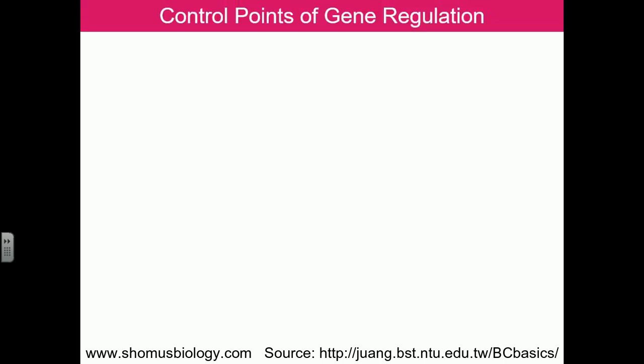Let's talk about the regulation of enzyme activity. We'll be seeing the different types and ways that enzymes are regulated — regulation during the production of the protein at the gene level, as well as after the production of proteins and the ways that enzymes can be regulated. Let's look at the control points of regulation.